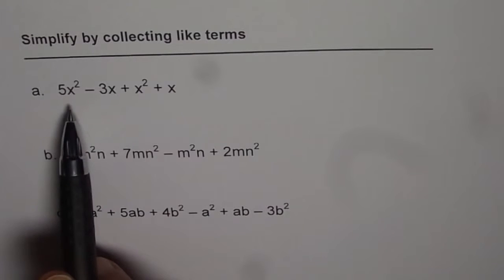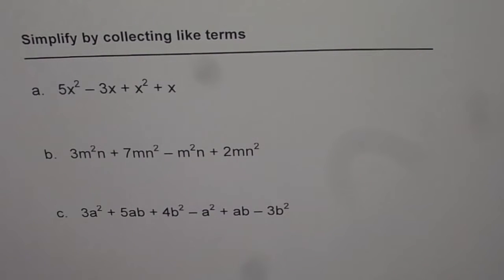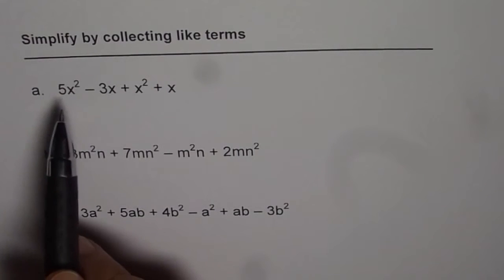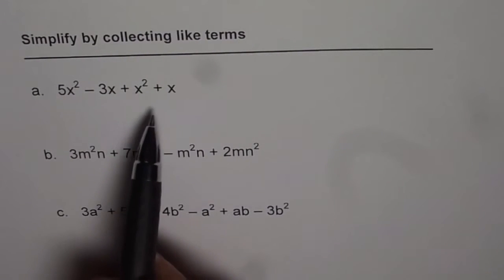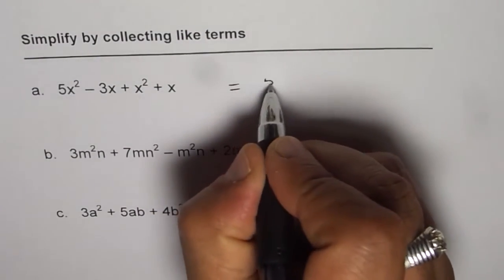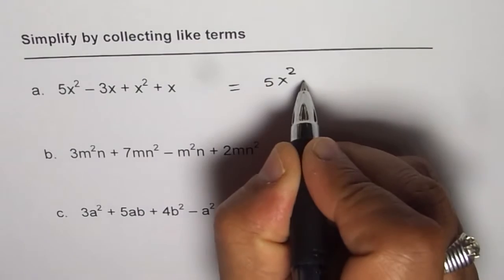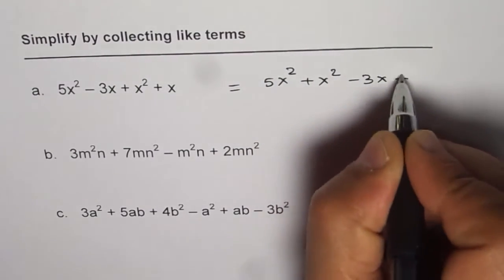First one is 5x² - 3x + x² + x. The like terms here are 5x² and x², and also -3x and x. Let's put them together, so we get 5x² + x² - 3x + x.